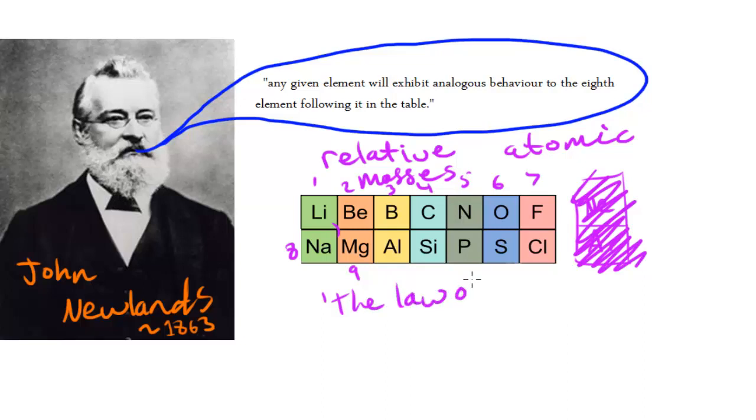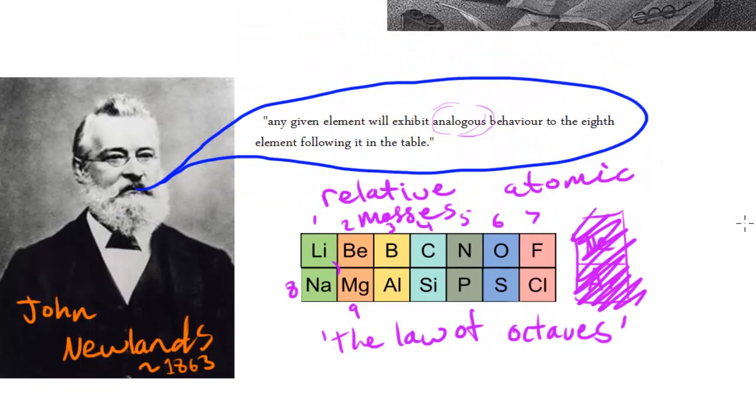He called this whole idea the law of octaves. The way he said it was: any given element will exhibit analogous behavior to the eighth element following it in the table. Analogous just means that it would display behaviors which were similar to that of the eighth element following in the table.